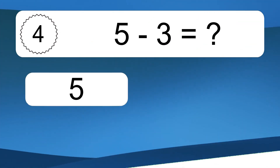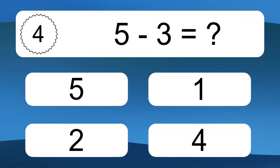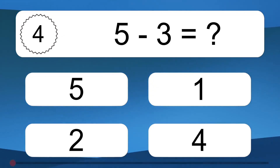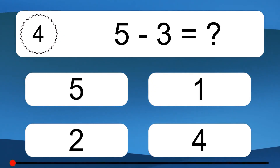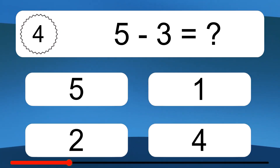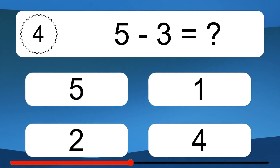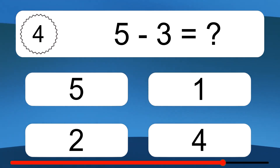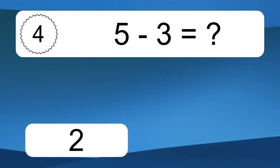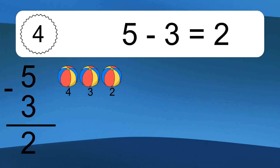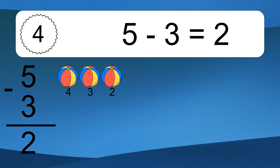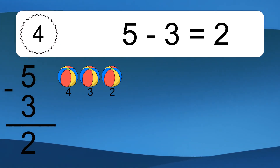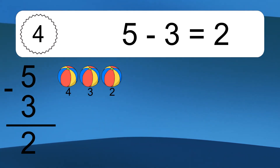5 minus 3 equals what? 5 minus 3 equals 2. Let's count it: 4, 3, 2.